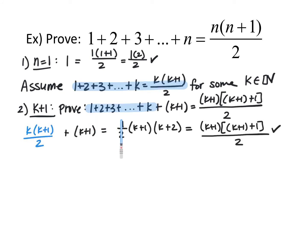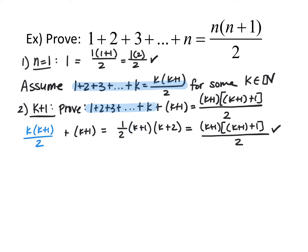I replaced 1 plus 2 plus 3 plus ... plus k with our assumed expression k times k plus 1 over 2, then kept the plus k plus 1. I then factored out one-half and k plus 1 from both terms. Factoring one-half times k plus 1 out of the first term leaves k; from the second term, factoring out one-half gives 2. So we have one-half times k plus 1 times the quantity k plus 2. I rewrote k plus 2 as k plus 1 plus 1 to match the desired form.